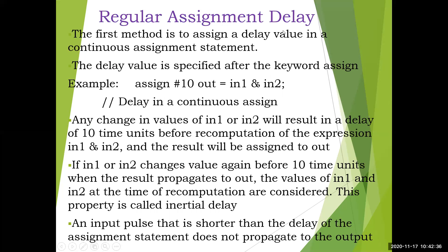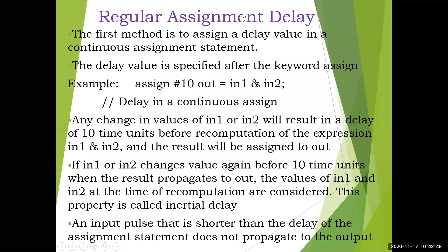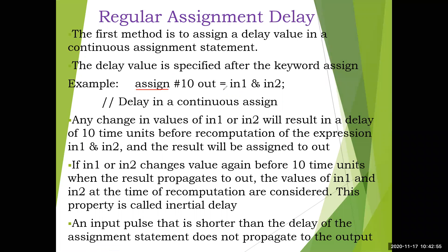The first method is to assign a delay value in a continuous assignment statement. In the normal assignment statement, the delay value is specified after the keyword assign using the hash symbol. For example: assign #10 out = in1 & in2. The operands are in1 and in2, and out is the output. The hash symbol with 10 means 10 time units is the delay.